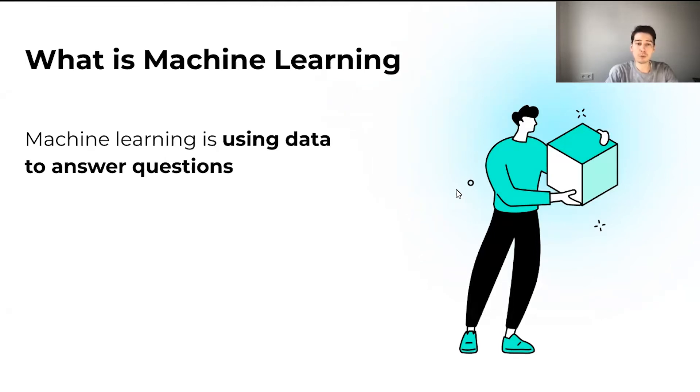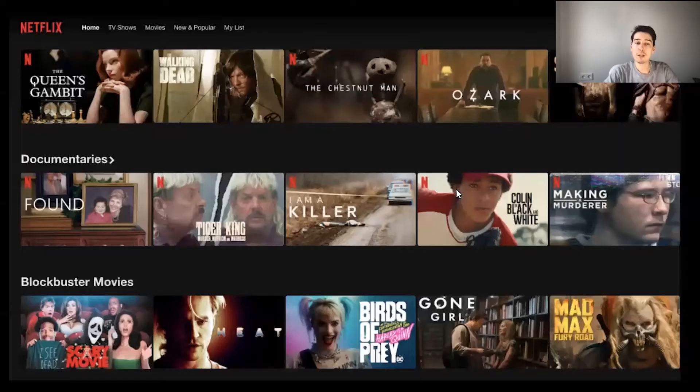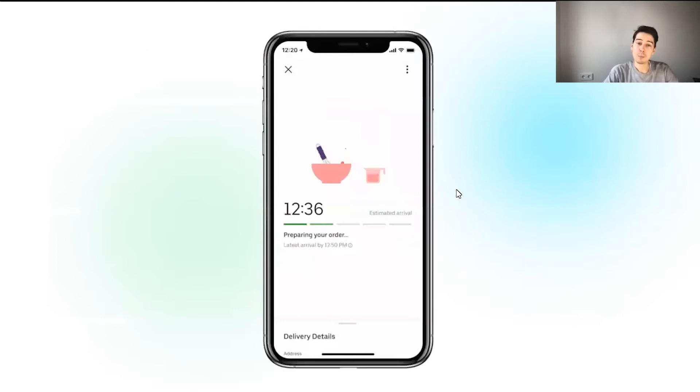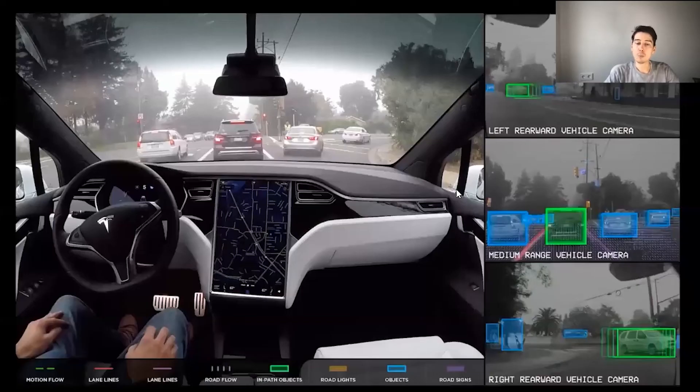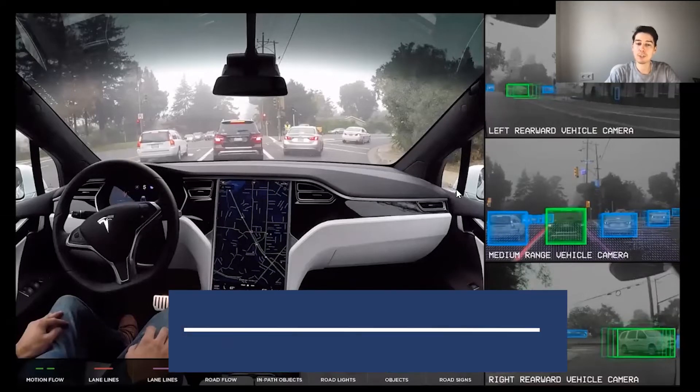Probably all of you are using different machine learning products several times a day. One of the classical examples of machine learning is classification of emails for spam. Another popular application is recommendation engines, for example, recommendation of movies and TV series on Netflix. Prediction of delivery time in Uber Eats is also done with the help of machine learning. And one of the hottest trends in ML right now is computer vision, for example, Tesla autopilot.